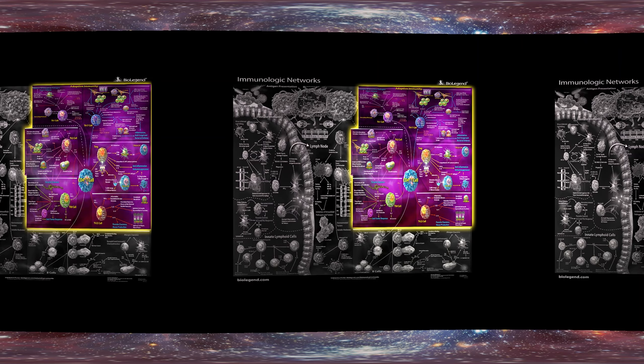Th22 cells can be generated by IL-6 and TNF-alpha. Similar to Th17 cells, they produce IL-22 for epithelial cell growth, improved intestinal barrier functions, and increased mucus and antibacterial peptide production. These AHR-expressing Th22 cells also make TNF-alpha and IL-13, which aid in parasite defense.